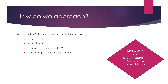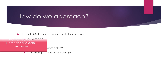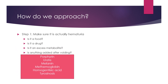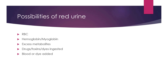Metronidazole is also a possibility. If no drugs are involved, could the child have an underlying condition causing them to excrete a metabolite that changes urine color? For example, porphyria, urate crystals — often seen in newborns where diapers look like blood when it is actually urate crystals — melanin, methemoglobin, tyrosinosis, and homogentisic acid. You also need to keep at the back of your mind Munchausen syndrome by proxy.